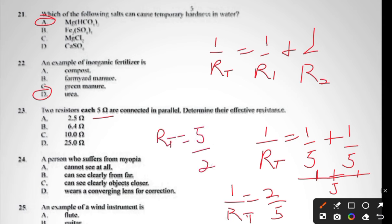That equals 2 over 5. When we make RT the subject, we're going to have RT equals 5 over 2. Now 5 over 2, when we work it out in the calculator, we're going to have 2.5. So the answer to question twenty-three is A, 2.5 ohms.